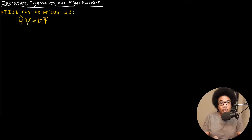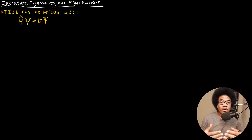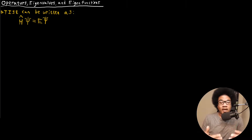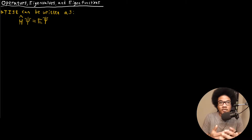In this video, we're going to discuss operators, eigenvalues, and eigenfunctions. These are all really important concepts from linear algebra that help us understand Schrödinger's equation here in quantum mechanics.